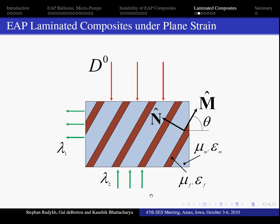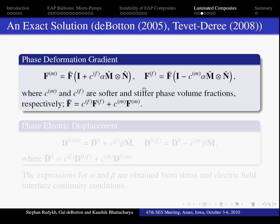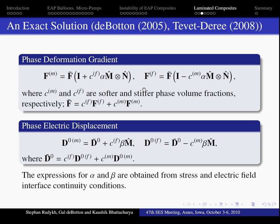And the composite can be pre-stretched and electrically excited. We use the interface continuity condition and define the phase deformation gradient and electric displacement. And exact expression for the constants α and β are obtained from stress and electric field continuity conditions.